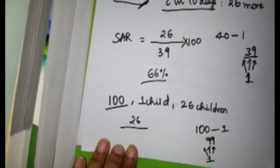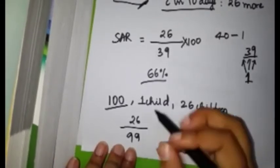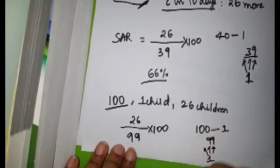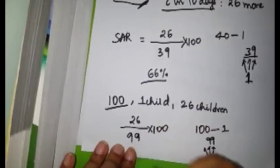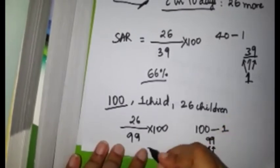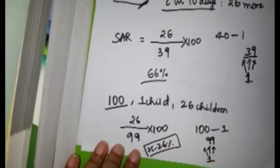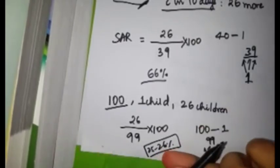So secondary attack rate is how much one child is able to infect 99 children. This one child could infect 26 children out of 99. For percentage, we make it into 100: 26 by 99 is like 25 by 100, something like 25-26%. So around this should be your answer. I hope this concept is clear.